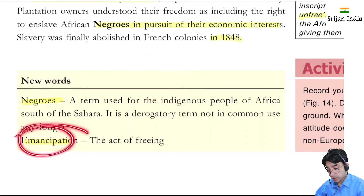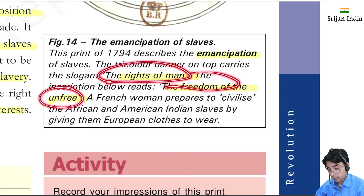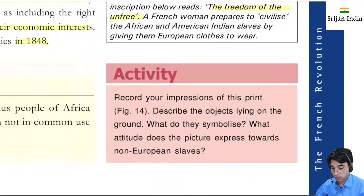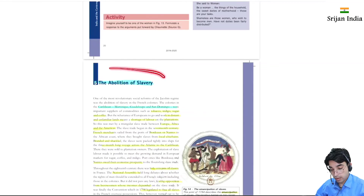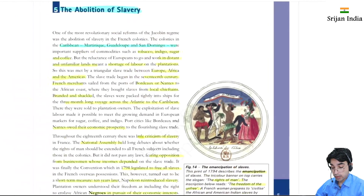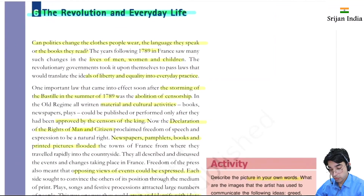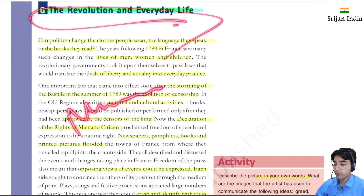Emancipation means the act of freeing. The 1794 event describes the emancipation of slaves under the triangular banner — representing the rights of men and the freedom of the unfree. French women helped civilize African and American Indian slaves by giving them European clothes. With abolition of slavery covered, the next and last part of the French Revolution will look at Napoleon Bonaparte and revolution in everyday life.